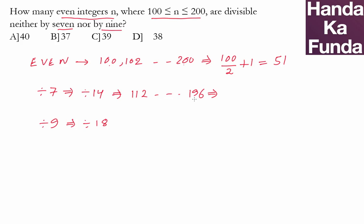So this goes on till 196. How many numbers are there in this particular series? 196 minus 112 is 84 by the common difference, that is 14, plus 1. Same idea as above: last term minus first term by common difference plus 1. 84 by 14 is 6 plus 1 is 7.